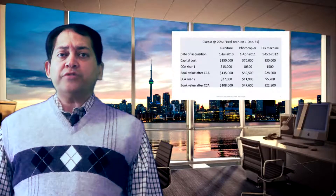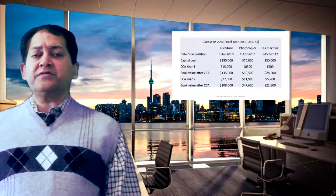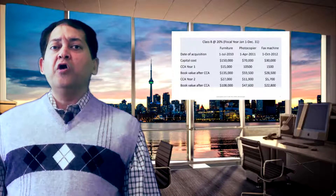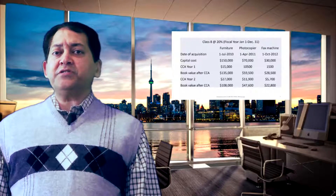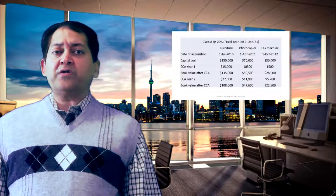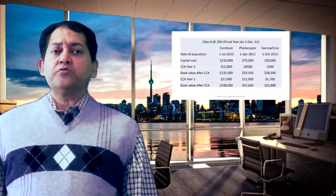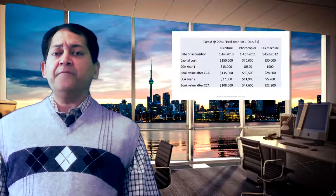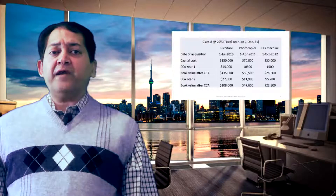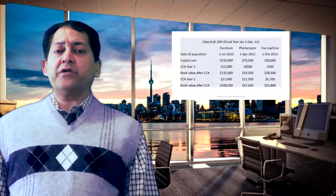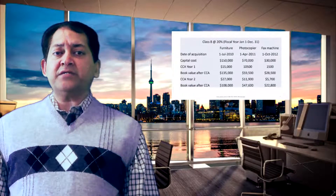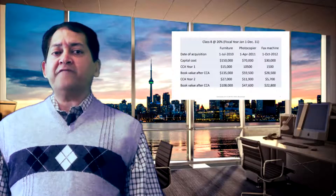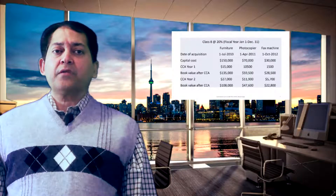Here is an example. We assume three types of assets acquired with a fiscal year running January 1st to December 31st. The date of acquisition for furniture is July 1st 2010, for the photocopier it is April 1st 2011, and for the fax machine it is October 1st 2012. Capital costs are $150,000, $70,000, and $30,000 respectively. CCA for year 1 is calculated for 6 months for furniture, 9 months for the photocopier, and 3 months for the fax machine using proration. For year 2, full-year CCA is $7,000 for furniture, $11,900 for the photocopier, and $5,700 for the fax machine, followed by the book value after the second year CCA.